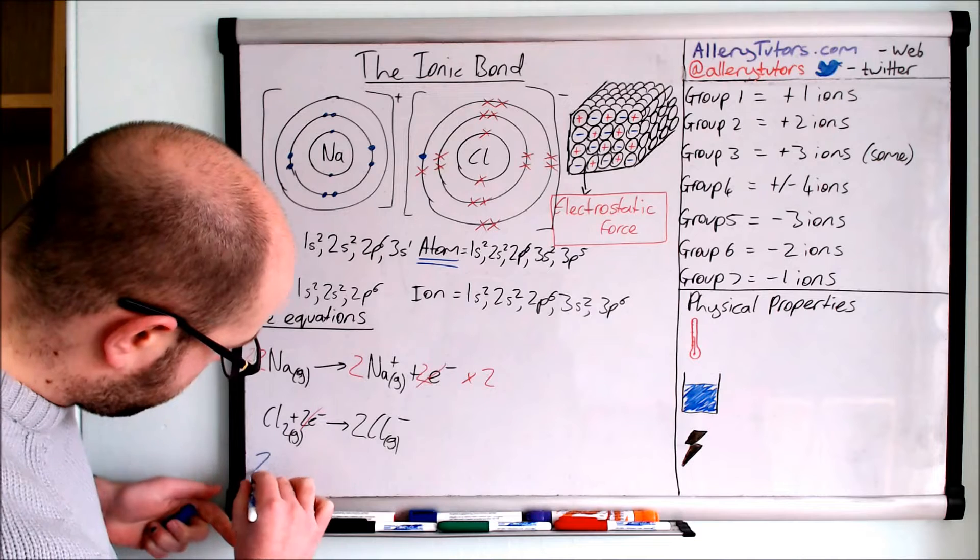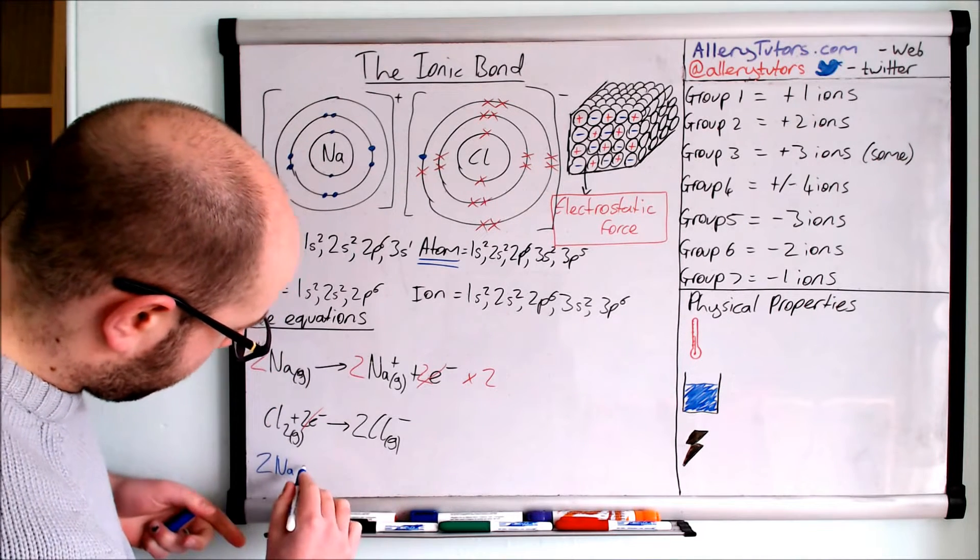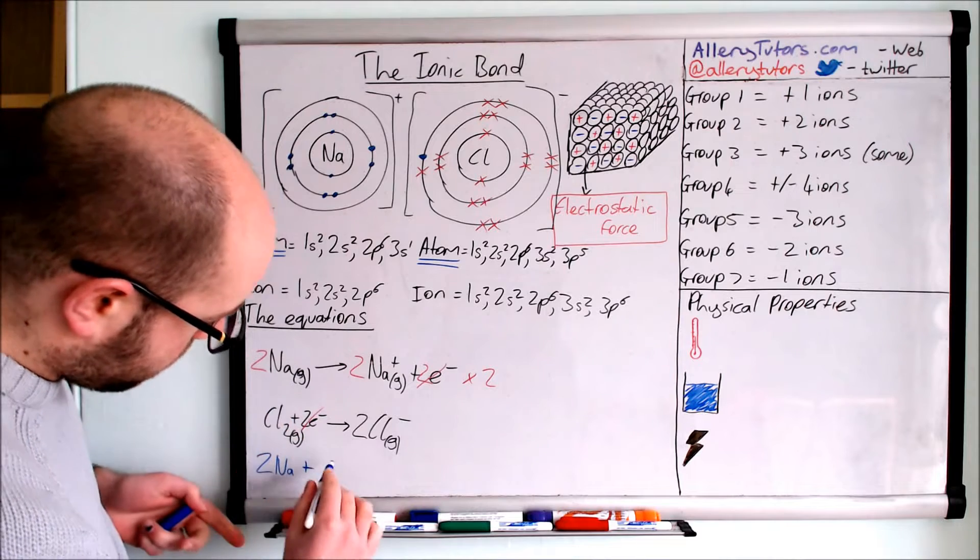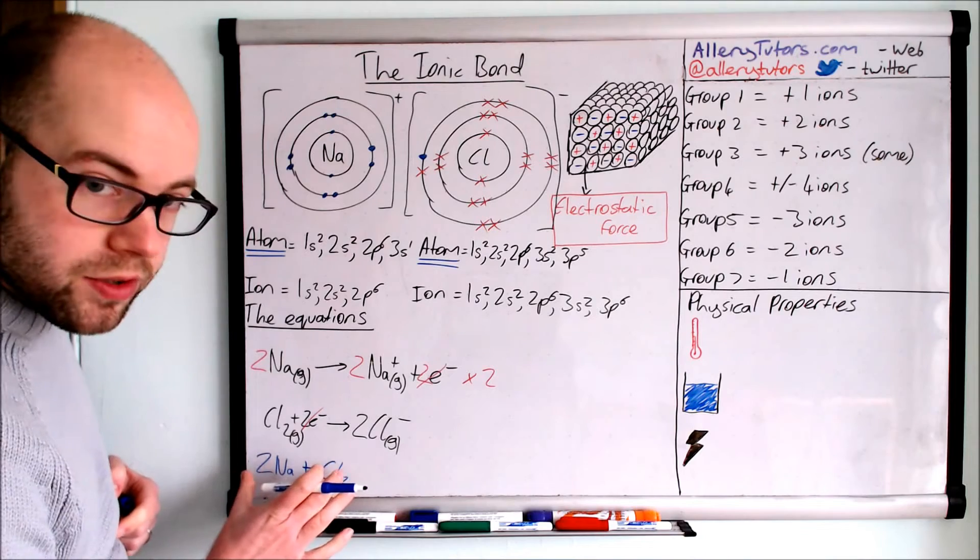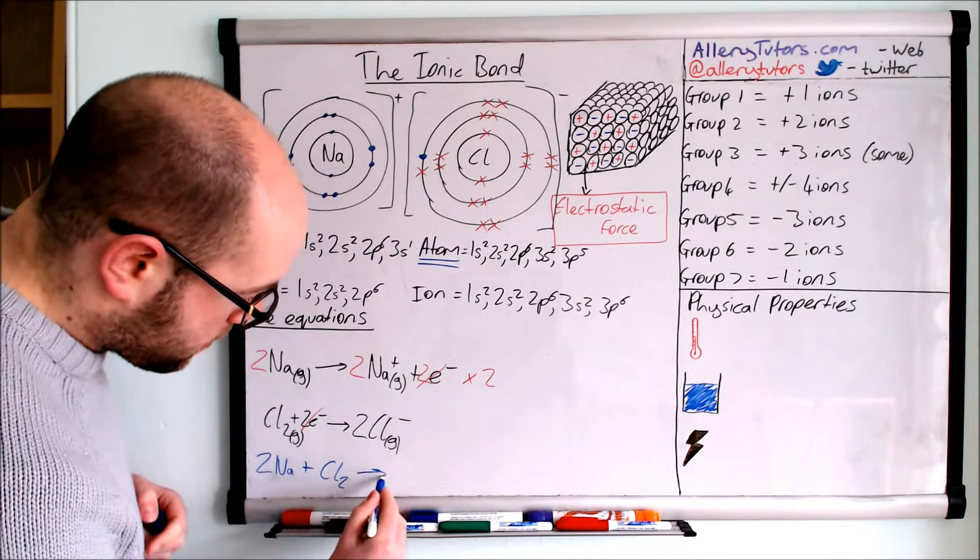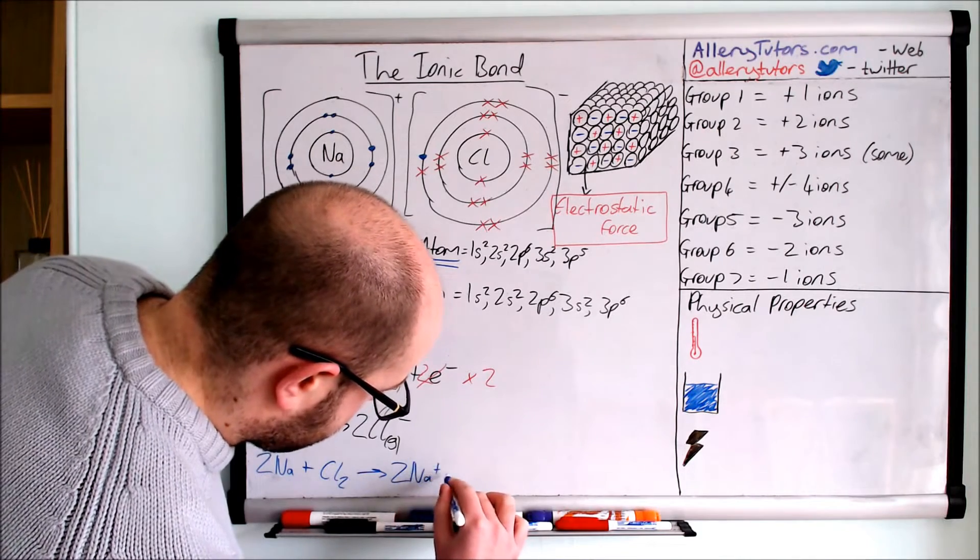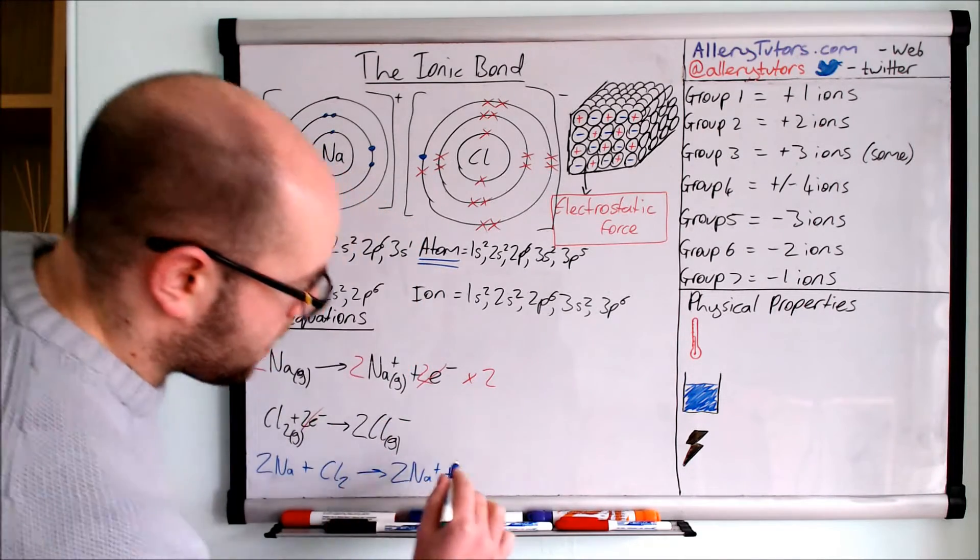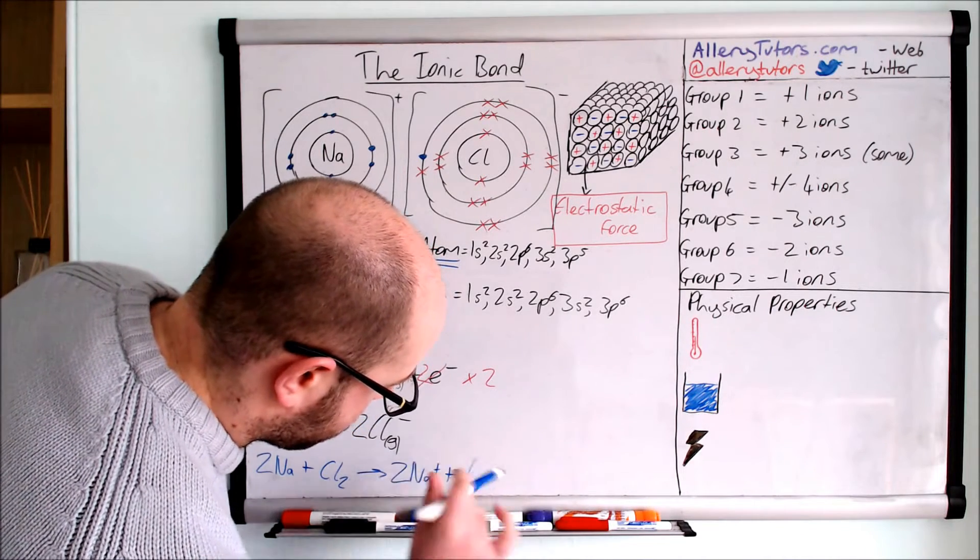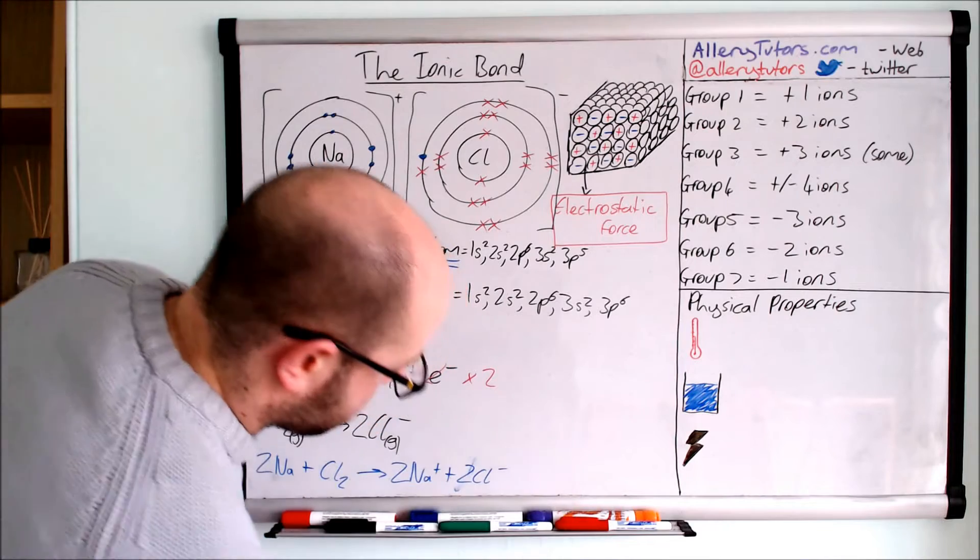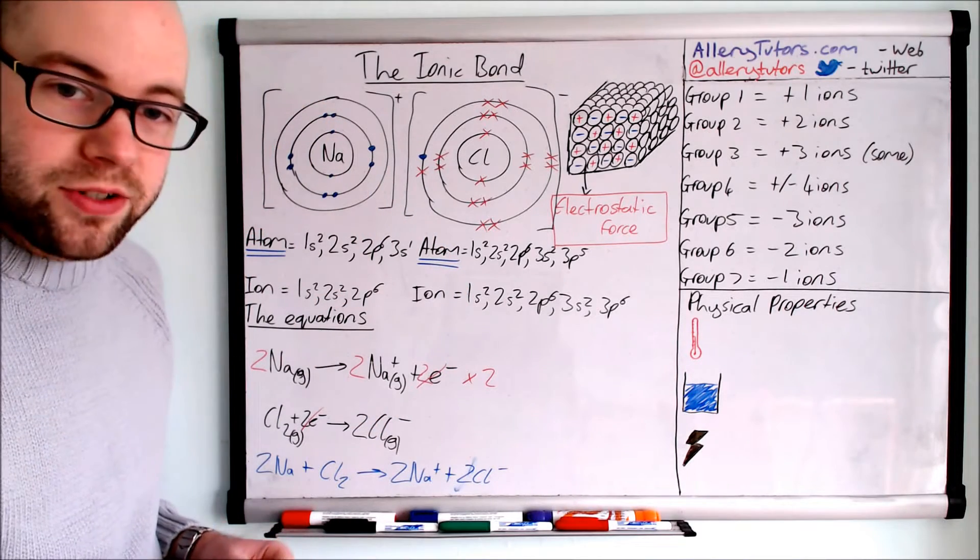So the ionic equation for this is, we'll do this in blue: sodium. But we've got two lots of Na which is over here, and we're going to add Cl2 because that's on the left-hand side. So everything on the left-hand side of the equation is drawn down to down here. That's going to form two lots of Na plus plus two lots of Cl minus. There is our ionic equation showing our ions.